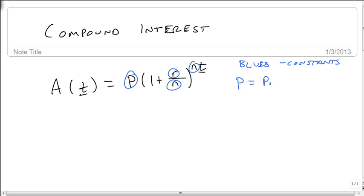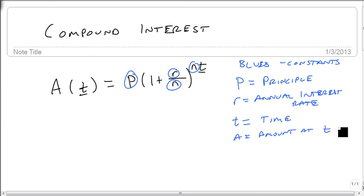P is the principal, that's how much we're going to put into it. r is our annual interest rate. t is, of course, time. And A is the amount at time t. The n is this interesting thing, and it's called the compound factor. It's how many times per year we recalculate the interest, measured in periods per year.